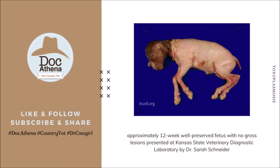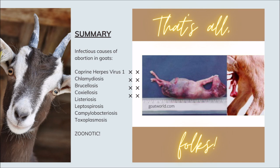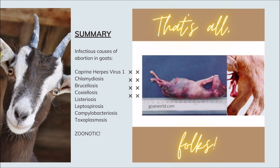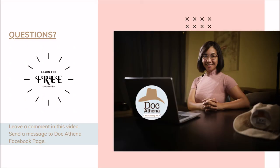That's all, folks. If you have any questions or want a copy of any references, you can send a message to DocAthena's Facebook page. In summary, the infectious causes of abortion in goats include caprine herpesvirus 1, chlamydiosis, brucellosis, coxiellosis, listeriosis, leptospirosis, campylobacteriosis, and toxoplasmosis. Most of these cause late-term abortion, and these cases are also zoonotic. I hope you learned something. Please keep safe, everyone. God bless us all.